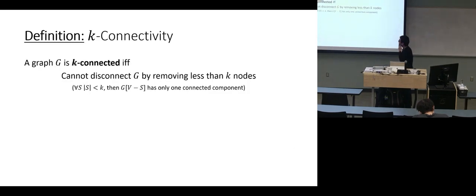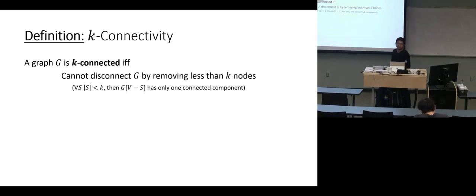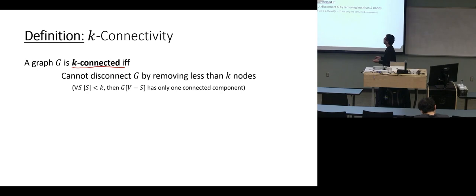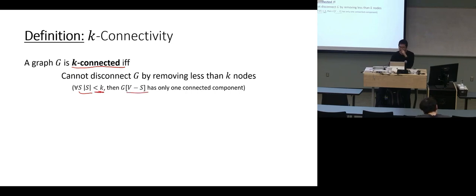This talk is going to be about k-connectivity. A graph is k-connected if you cannot delete fewer than k nodes and have the graph disconnected. That is, for every set S of size less than k, when you delete it, the graph remains connected and has only one component.